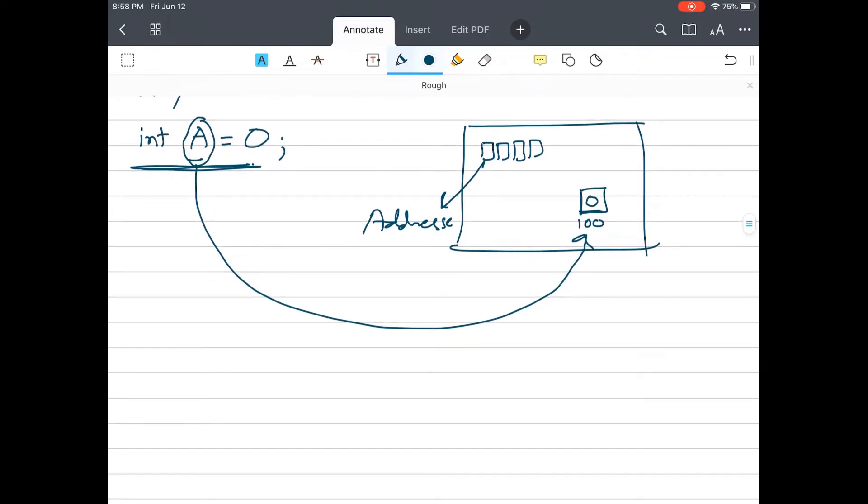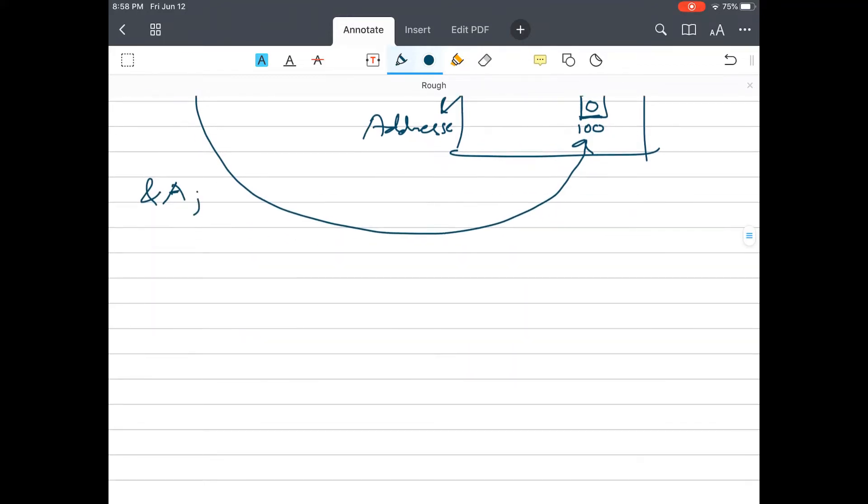So A is just a pointer to that location, and in C, if you know C, you can find the address of A by using this syntax. Now coming to why index start at zero. In vector—it means in array—if you have a vector of integer called V which saves five integers.